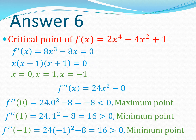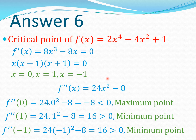Now let's come to question number six — finding critical points of the function. The critical point is where the derivative of the function equals zero. Taking f′(x) equal to 8x³ minus 8x and setting it equal to zero gives us the stationary points. We remove the common factor of 8 to get x³ minus x equals zero, factorize to get x(x²−1) equals zero, and write x²−1 as (x−1)(x+1) equals zero. This immediately gives three critical points: x equals 0, x equals 1, and x equals minus 1.